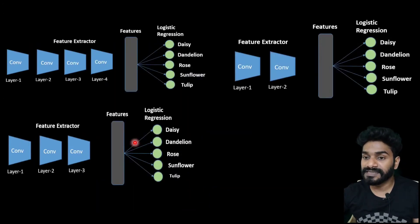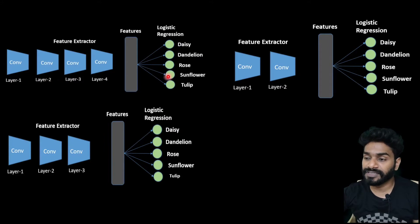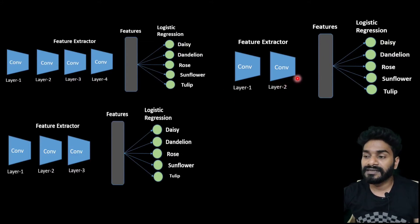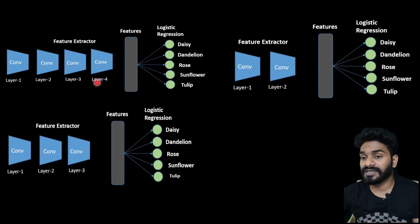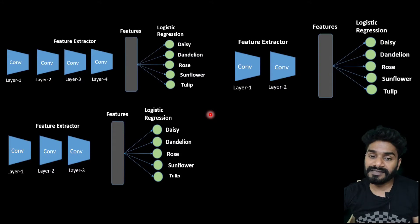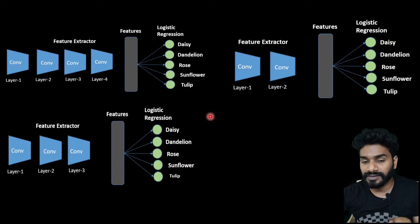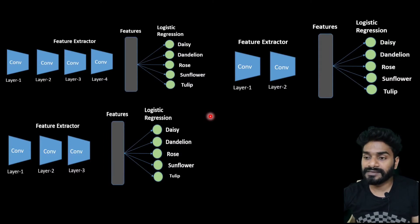We'll do this for three cases. We'll extract features from layer four, layer three, and layer two, and separately do training with logistic regression to see which one does best. This kind of linear separability technique can also be used to compare different self-supervised models to know which one gives you the best representation. Now let's jump into the code to see how we can get the features, save the features, and then train a logistic regression.